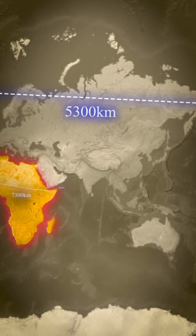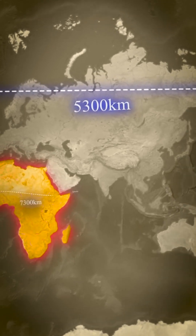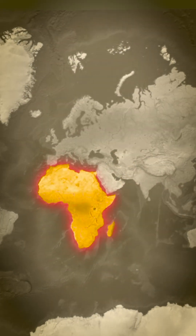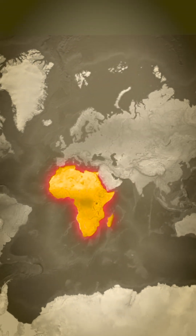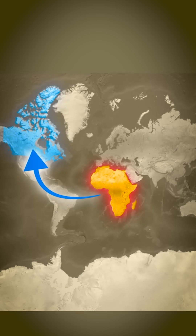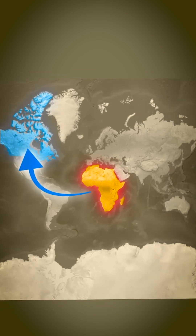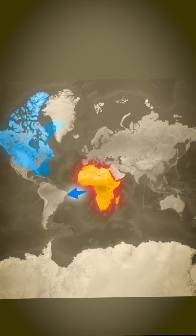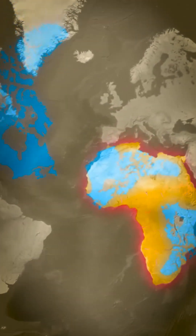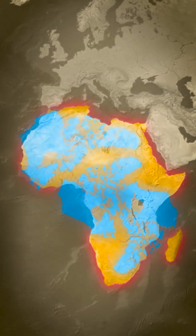This is the biggest trick of the Mercator projection. In traditional maps, Africa appears smaller than Canada, even though you could fit three countries the size of Canada inside Africa.